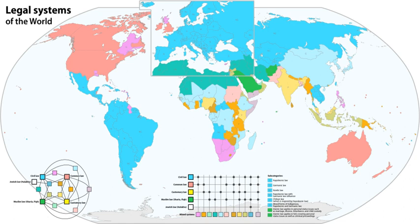For centuries, through the 19th century, the common law recognized only specific forms of action, and required very careful drafting of the opening pleading to slot into exactly one of them: debt, detinue, covenant, special assumpsit, general assumpsit, trespass, trover, replevin, case (or trespass on the case), and ejectment.